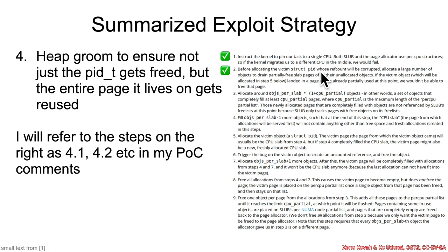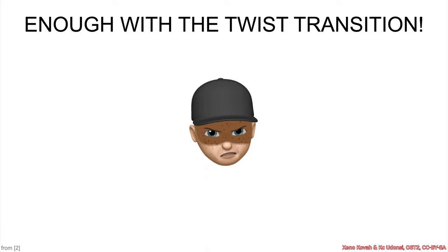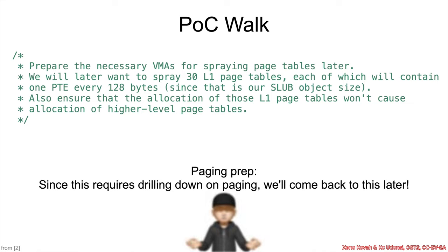Before allocating the victim struct PID whose ref count is to be corrupted, allocate a large number of objects to drain the partially-free slab pages of all their unallocated objects. He basically wants to make sure that when he allocates the PID-T, it's going to be on a page that has nothing except things he controls — that way, later on, he can free the entire page. We hit some code that looks like gobbledygook requiring a drill-down on paging, so we'll skip it for now and come back to it later. That skipped code is preparation for making the page re-allocatable.